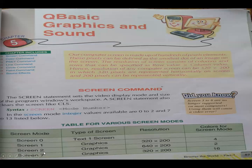After that, we use screen 7. Screens 3 to 6 are no longer supported on most computers, so they will generate a video error — that is why we use screen 7. From screen 7 to screen 13, these are the screens we use. All of these are graphical screens with different resolutions. Screen 7 has a resolution of 320 into 200 and 16 color combinations.